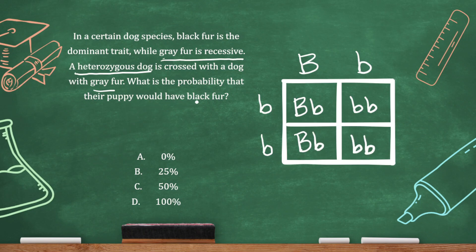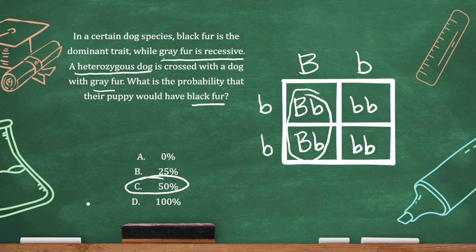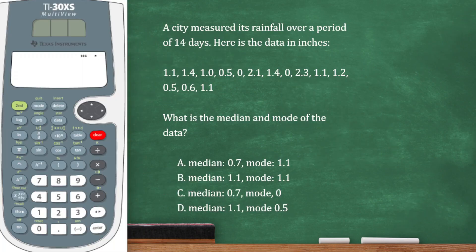So which puppy would have black fur? Since black fur is the dominant trait, we pick any offspring that have a capital B in them. That's two out of four, which is 50%.